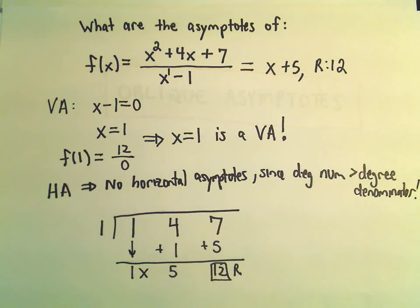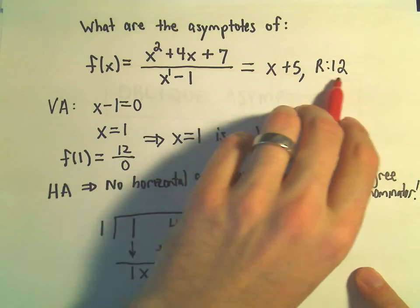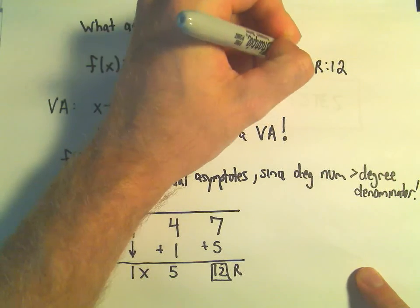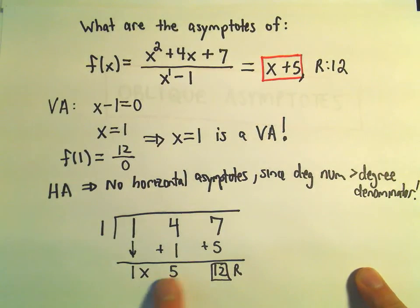But the idea is, once you've done the long division, forget about the remainder. Whatever's out front, whatever you get when you do the long division, if you omit the remainder, that's going to be your oblique asymptote.